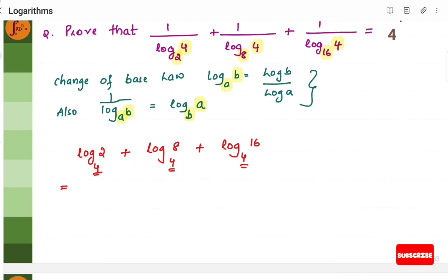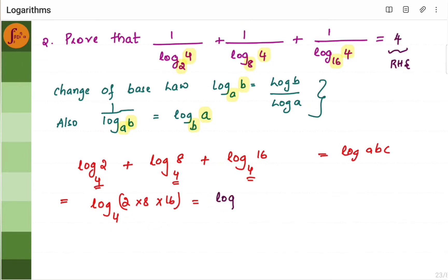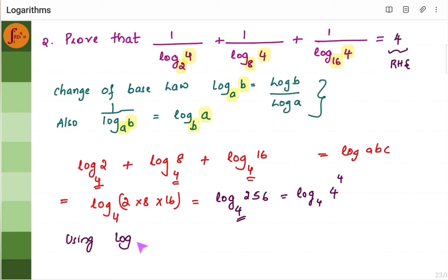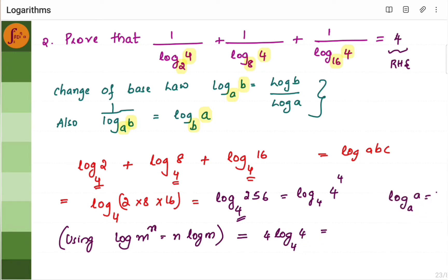Since the bases are the same, we can use the addition logarithmic law: log a plus log b plus log c is log abc. So we can write this as log (2 × 8 × 16) to the base 4. That is log to the base 4 of 256. We write 256 as 4 to the power 4. Using log m to the power n equals n log m, this becomes 4 × log 4 to the base 4. Since the base and the number are the same, log 4 to the base 4 is 1. So we get 4 × 1 = 4, which is the RHS. Hence proved.